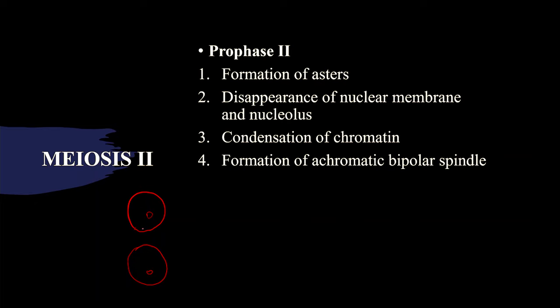The chromosome present inside the nucleus is after crossing over. There will be the formation of asters and the disappearance of nuclear membrane and nucleolus, along with condensation. There will also be the formation of an achromatic bipolar spindle — the spindle fibers are formed in the cytoplasm itself, not from the centriole. That is why it is called an achromatic bipolar spindle. This is all about prophase II.